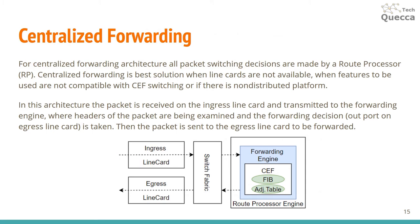For centralized forwarding architecture, all packet switching decisions are made by a route processor. Centralized forwarding is the best solution when line cards are not available, when features to be used are not compatible with CEF switching, or when using a non-distributed platform. In this architecture, the packet is received on the ingress line card and transmitted to the forwarding engine, where packet headers are examined and the forwarding decision — the output port on the egress line card — is taken. The packet is then sent to the egress line card to be forwarded.